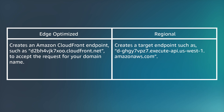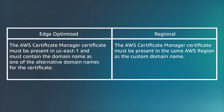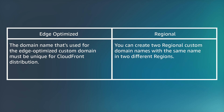For Edge Optimized, it creates an Amazon CloudFront endpoint such as cloudfrontid.cloudfront.net to accept requests for your domain name. For Regional custom domain name, it creates a target endpoint such as d-id.execute-api.us-west-1.amazonaws.com. For Edge Optimized, the ACM certificate must be present in US East 1 and must contain the domain name as one of the alternative domain names. For Regional, the ACM certificate must be present in the same AWS region as the custom domain name. Additionally, the Edge Optimized domain name must be unique for the CloudFront distribution, while you can create two regional custom domain names with the same name in two different regions.